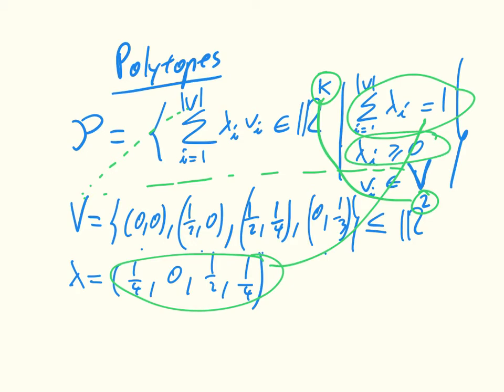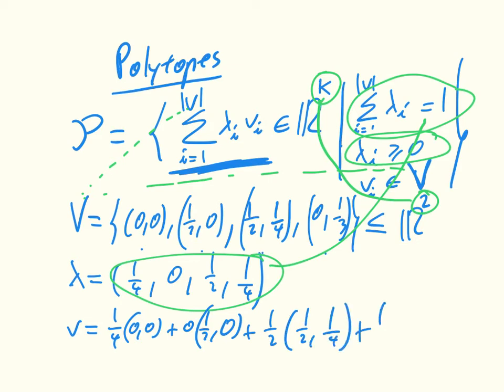Once we've got that lambda, we can create a v, which is essentially going to be 1/4 times (0,0), plus 0 times (1/2, 0), plus 1/2 times (1/2, 1/4), plus 1/4 times (0, 1/3).